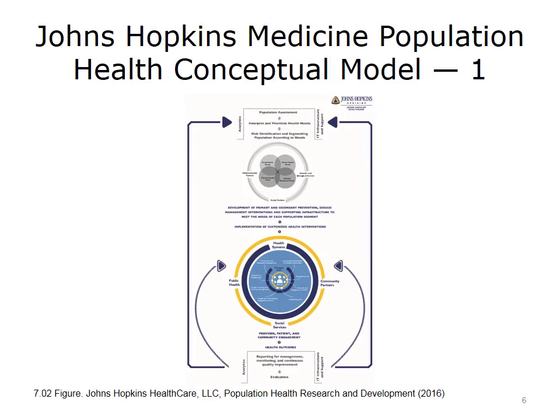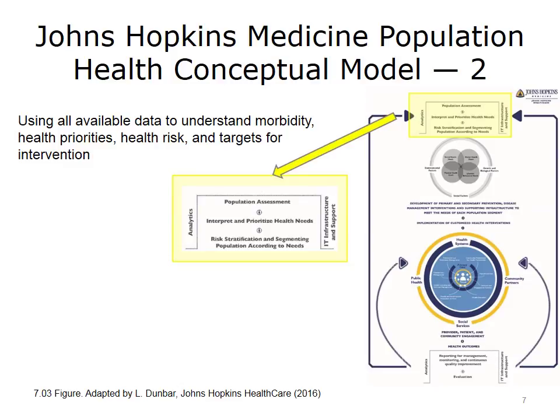Johns Hopkins Healthcare has developed a population health conceptual model, which begins with population prioritization and ends with evaluation of population health management interventions. We begin with the population assessment at the top of the model. This portion of the model involves using all available data to understand the morbidity of a population, the health priorities, health risk, and the target for intervention. The population health assessment is often informed by claims data, administrative data, demographic data, and other data gleaned from electronic medical record clinical data. That population assessment is pooled into a population database, and an analytics team interprets and prioritizes the health needs of that population.